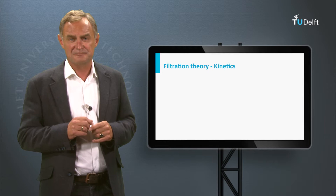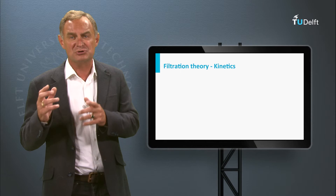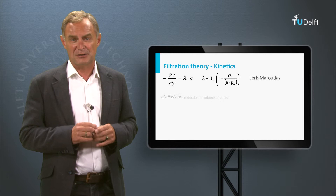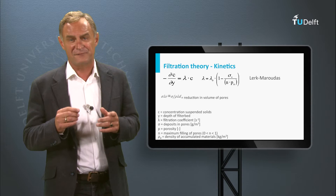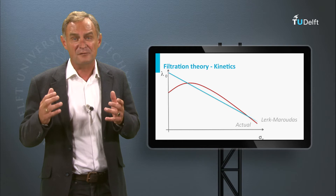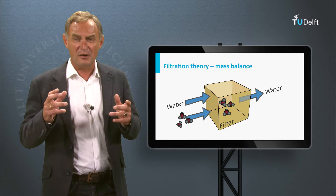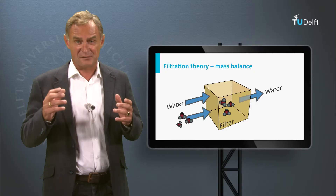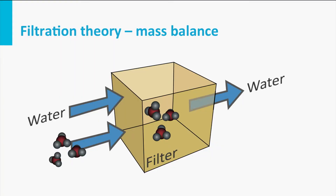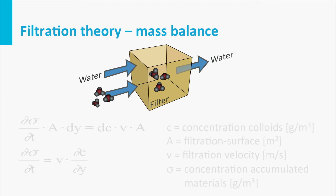The change in water quality over the height of the filter bed is determined by the so-called filter coefficient lambda and the influent water quality. When the filter bed is clean, the filter coefficient is relatively large, but it gradually diminishes because of the accumulation of solids in the bed. The accumulation of solids in the bed is the consequence of the law of conservation of mass: it equals the removal of these solids from the water phase over time.